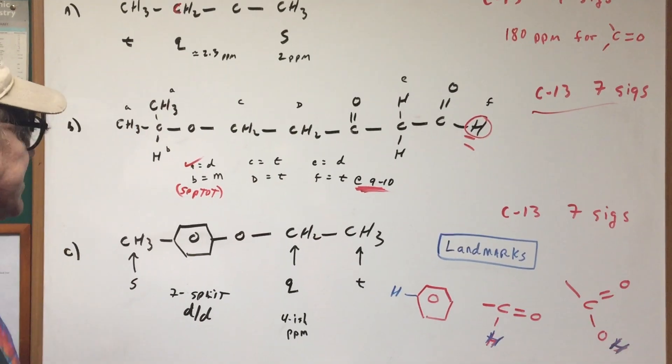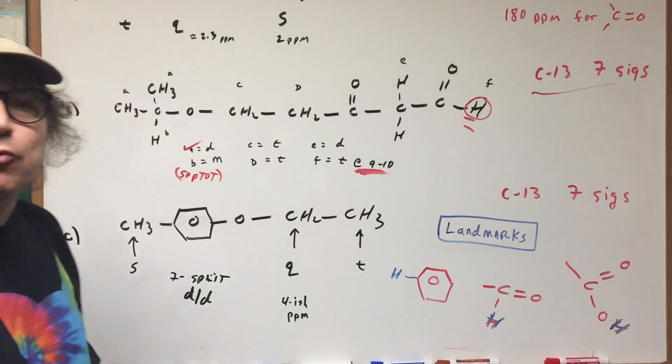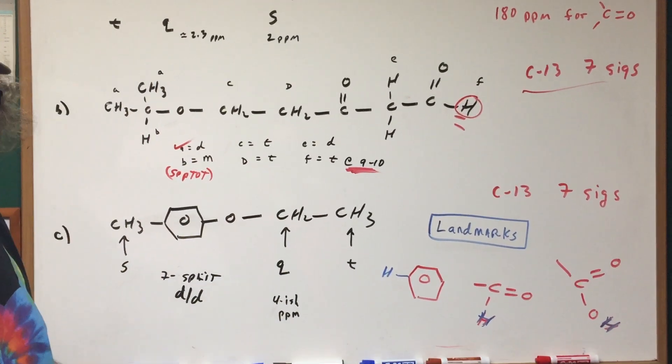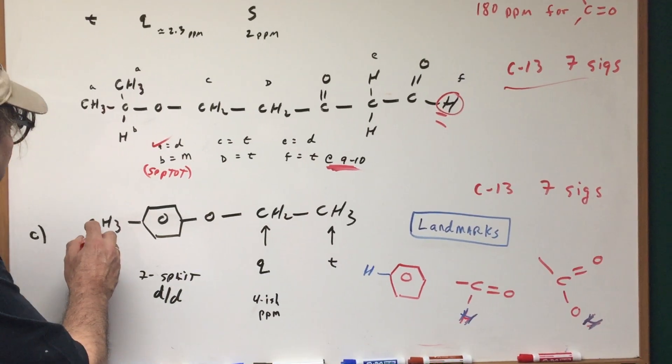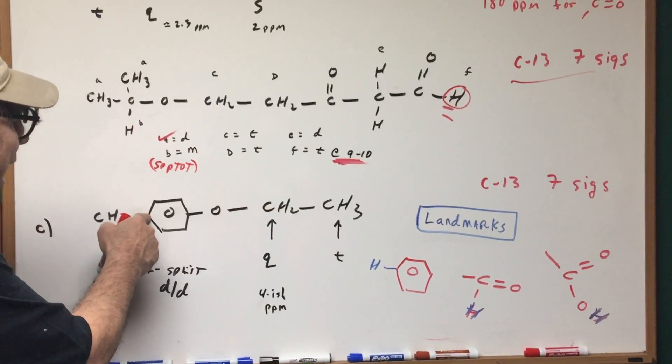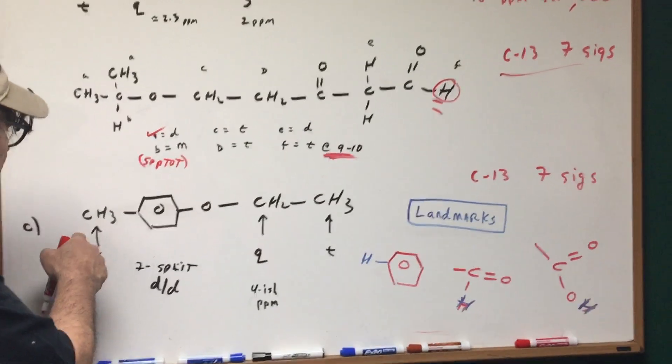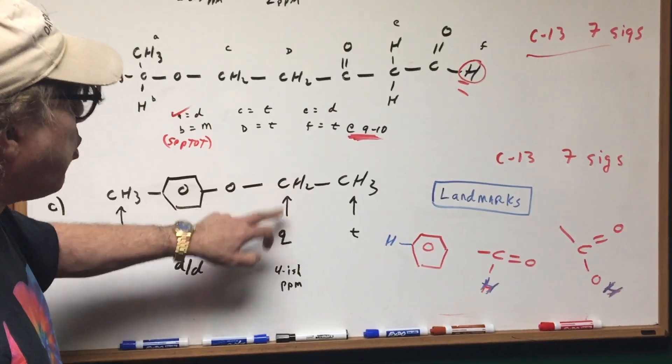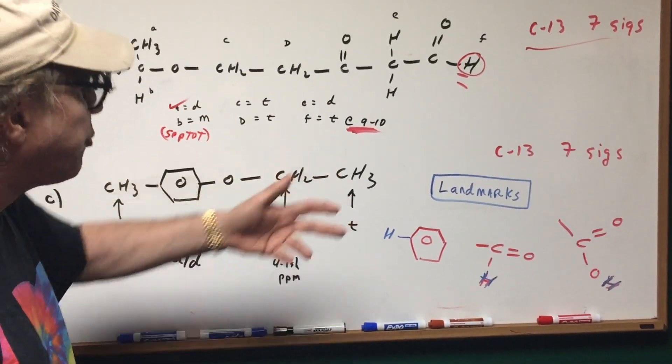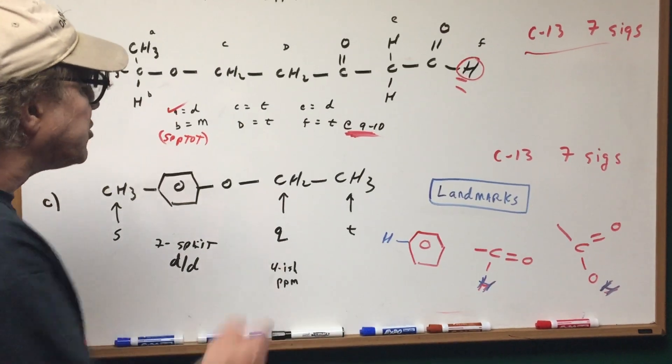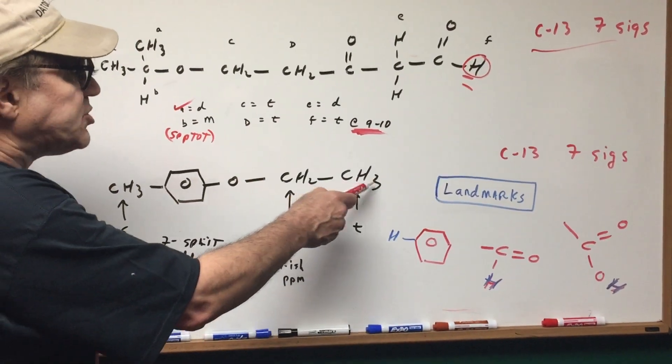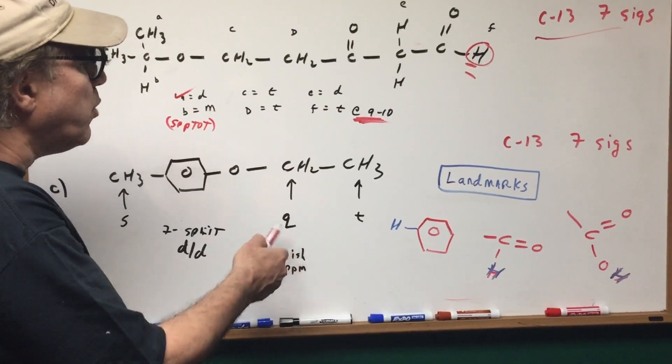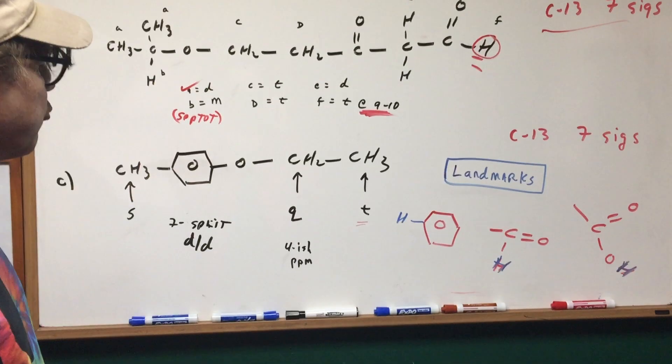If we go to letter C now, the minute you see a benzene ring, think what I call lucky seven. That's going to give a signal around seven. This H, if you look here, this carbon has no H's, so that would be a singlet. This would give you a quartet, because it's next door to a carbon with three. Three plus one is four, it's a quartet. And these three, if you look next door, there's two H's, two plus one will give you three. So this would give a triplet.